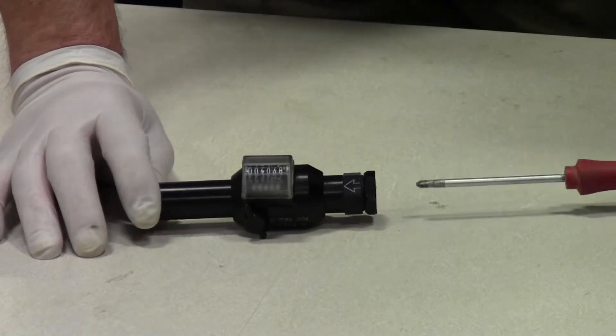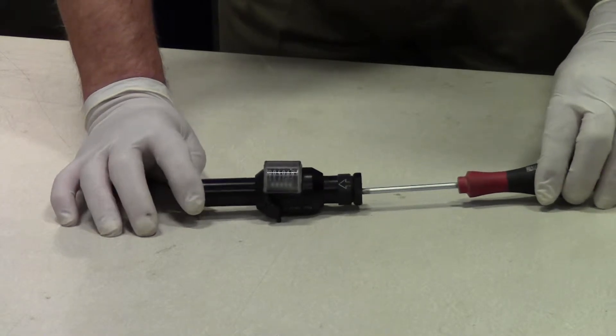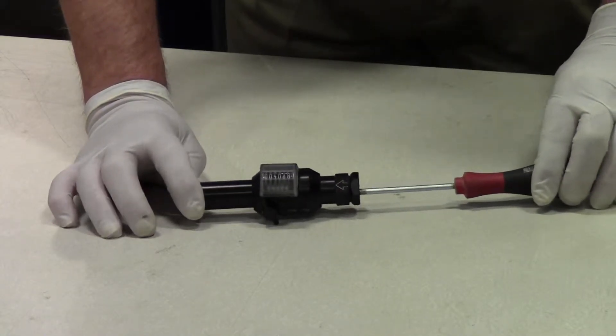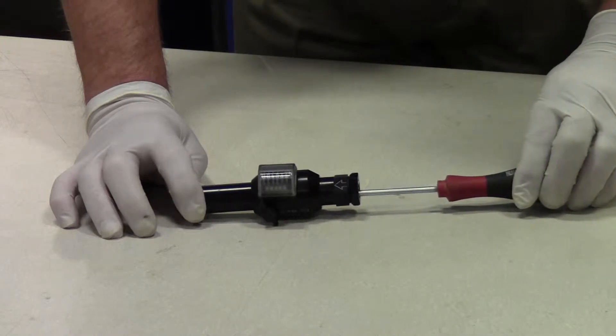you first need to see if the magnet shuttle is moving on the end of the counter with the arrow on it. Take the screwdriver and push on the shuttle to see if it moves.